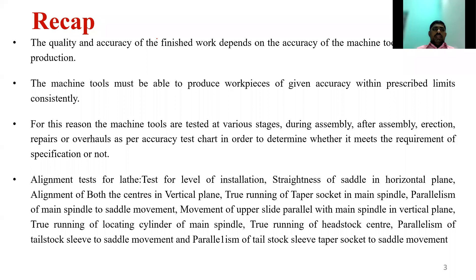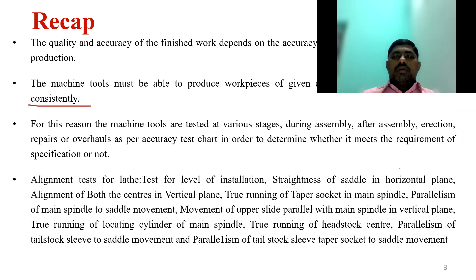In lecture one we understood that the quality and accuracy of finished work depends on the accuracy of the machine tools used for producing the products. The machine tools must be able to produce work pieces of given accuracy within the prescribed limits consistently. For this reason, machine tools are tested at various stages — during assembly, after assembly, erection, repairs or overhauls — to verify accuracy as per the accuracy test chart, in order to determine whether they meet the specification requirements.